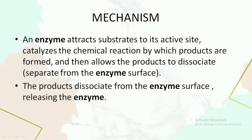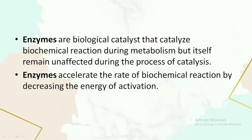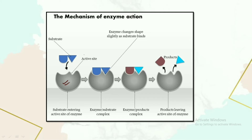An enzyme attracts its substrate at the active site, which catalyzes the chemical reaction by which products are formed. The products are then allowed to dissociate and get separated from the enzyme surface. There occurs a slight change in the active site so that the substrate can accommodate well, and after accommodation the substrate gets converted into the product, followed by the release of the product.